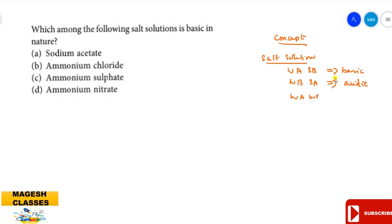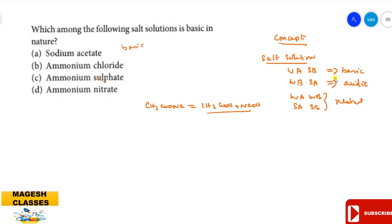For a weak acid and weak base combination, the solution is neutral. Option A, sodium acetate, is the combination of weak acid acetic acid and strong base NaOH, so the solution is basic in nature. Option B, ammonium chloride, is the combination of weak base ammonium hydroxide and strong acid hydrochloric acid, so it is acidic.